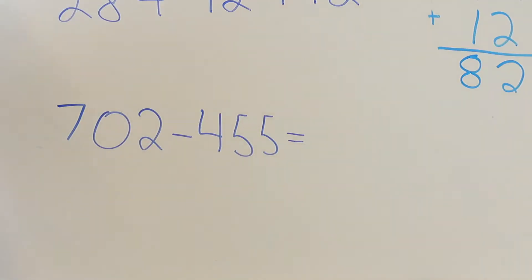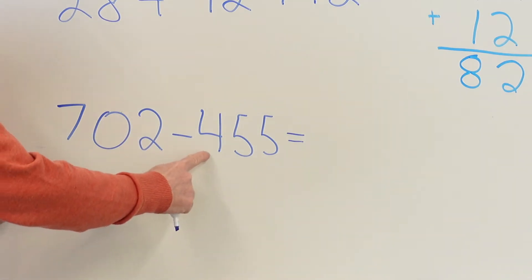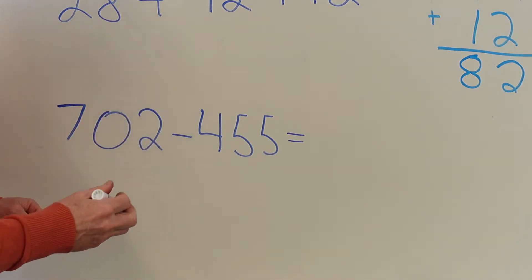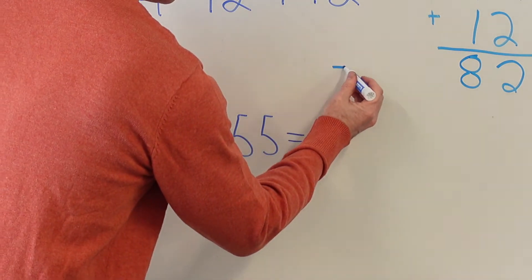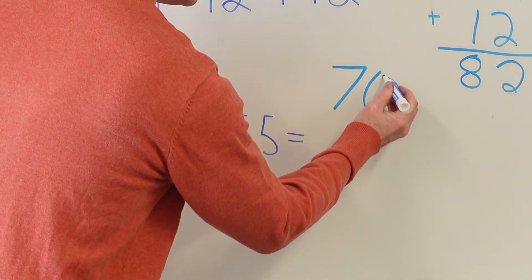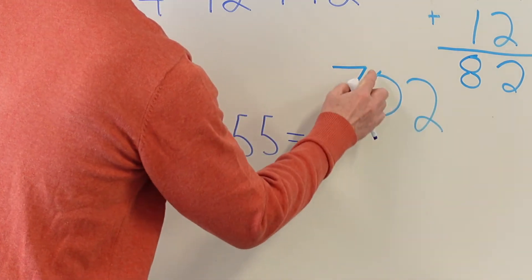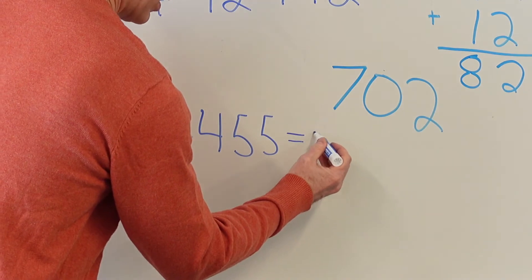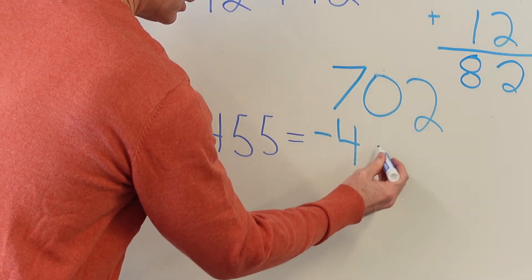Okay, let's take a look at this problem here. It is 702-455. I need to rewrite that to make it a little bit easier for me to subtract. So here is 702, you make that number a little neater, minus 455 just like this. Okay, put my line underneath there.